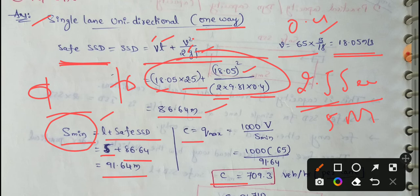I will measure the traffic capacity. This is practical capacity. I will measure the traffic capacity. Traffic capacity equal to Q maximum equal to 1000 into V by S minimum. 1000 V over 65.